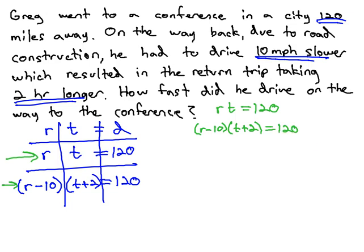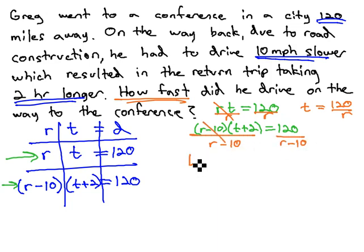We can solve this simultaneous product by dividing both equations by the same factor. We're going to divide by the factor we're looking for, and the question is asking how fast or what is the rate. So when we divide by the factor with R, or the rate, we find out that time is equal to 120 over R. Doing the same thing in the other equation, we divide by R minus 10, the factor with R, and that gives us t plus 2 equals 120 over R minus 10.